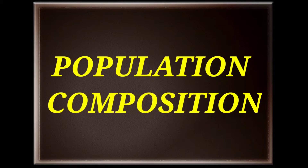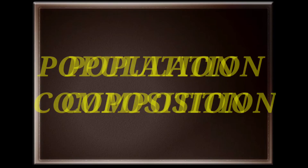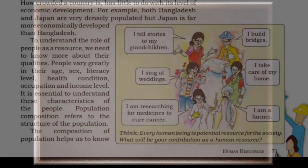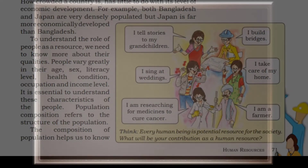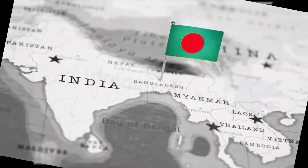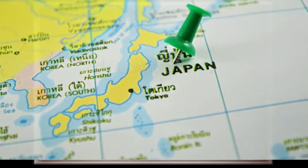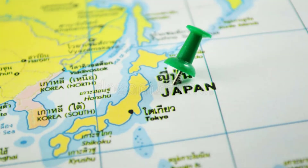An interesting way of studying the population composition of a country is by looking at the population pyramid, also called an age-sex pyramid. How crowded a country is has little to do with its level of economic development. For example, both Bangladesh and Japan are very densely populated, but Japan is far more economically developed than Bangladesh.